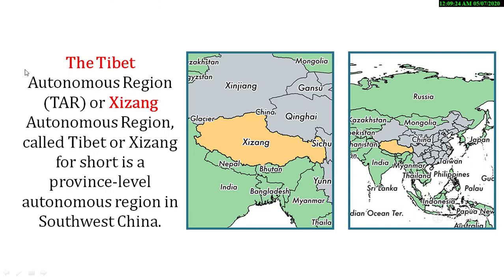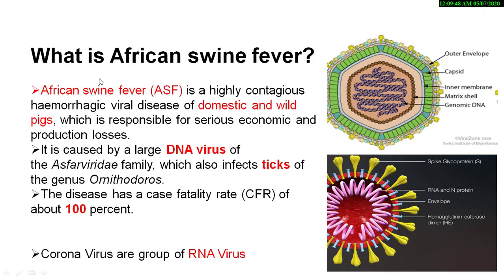We will talk about the current affairs related to Tibet, the Autonomous Region in China, and Xinjiang Province. We will also discuss the difference between DNA viruses and RNA viruses — African Swine Fever is a DNA virus.